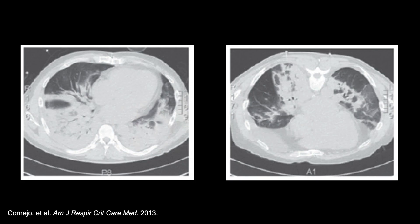In the images depicted, you can see dorsal airspace opacities in the first image. These areas are not participating in gas exchange, but due to gravity, these dependent areas of the lungs get the greatest amount of blood flow. There is a mismatch between ventilation and perfusion.